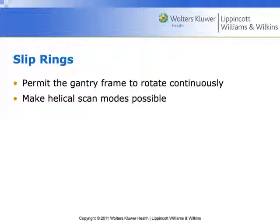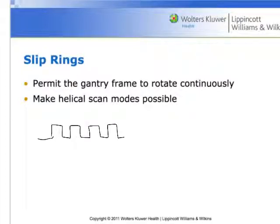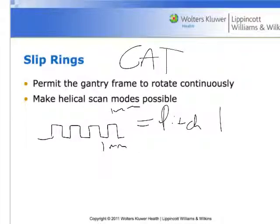In axial scanning, the table moves, then we scan; the table moves, then we scan. If we have a pitch of one, the movement equals the scanning thickness — for example, a one-millimeter slice thickness matched with a one-millimeter movement. Move, scan. Move, scan. That's axial scanning, which is what we were referring to as Computed Axial Tomography.